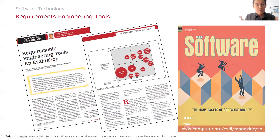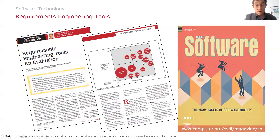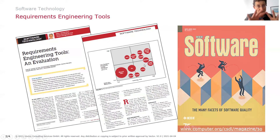That is again where the tools in the upper right corner come into the picture: Polarion, which is now part of the Siemens environment; DOORS, which is part of the IBM Rational Suite; Provision, which is a standalone tool that includes requirements and modeling; and also the Quality Center, which evolved from test management into requirements management. All of these have their pros and cons, but essentially form the baseline for professional requirements engineering tool usage.